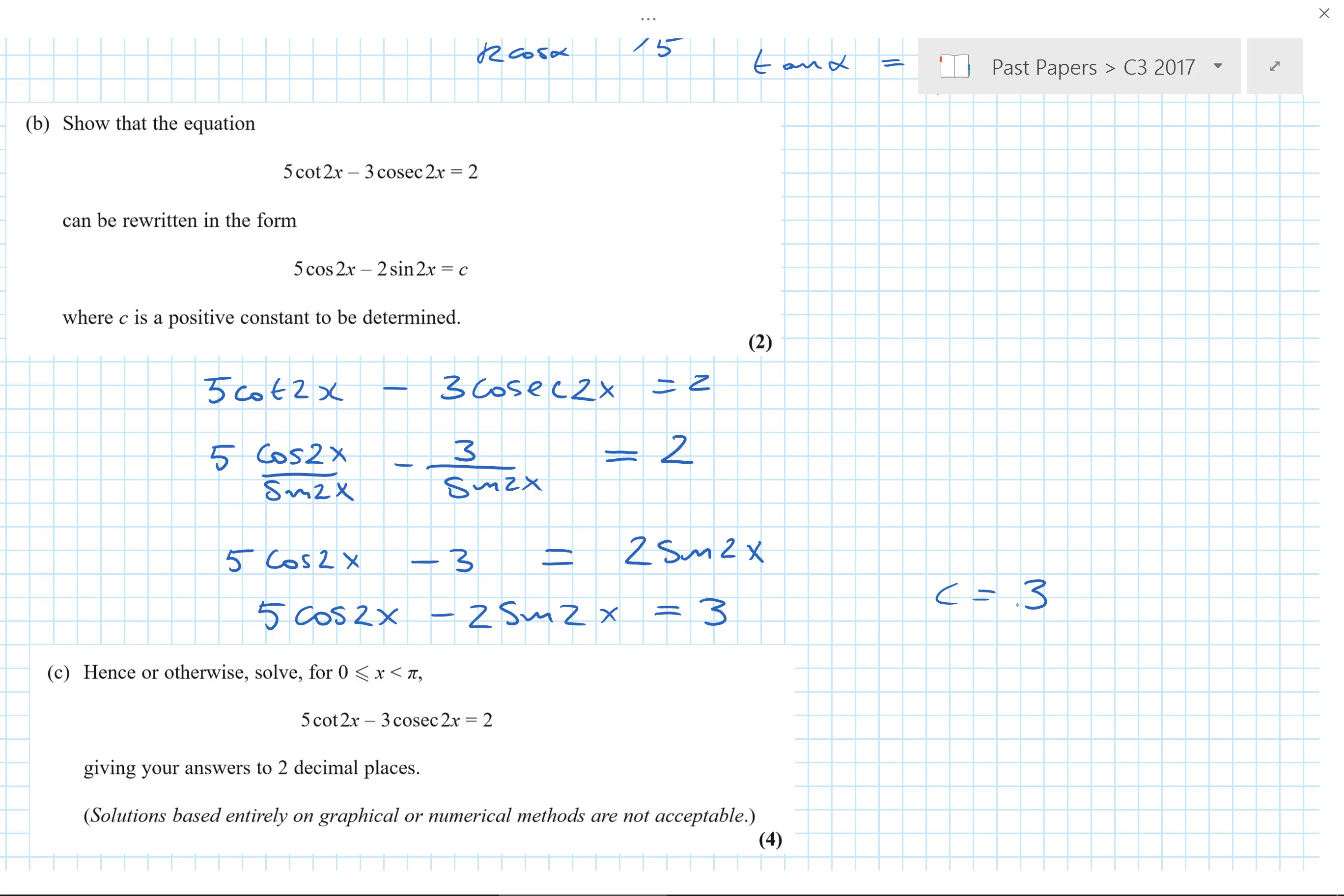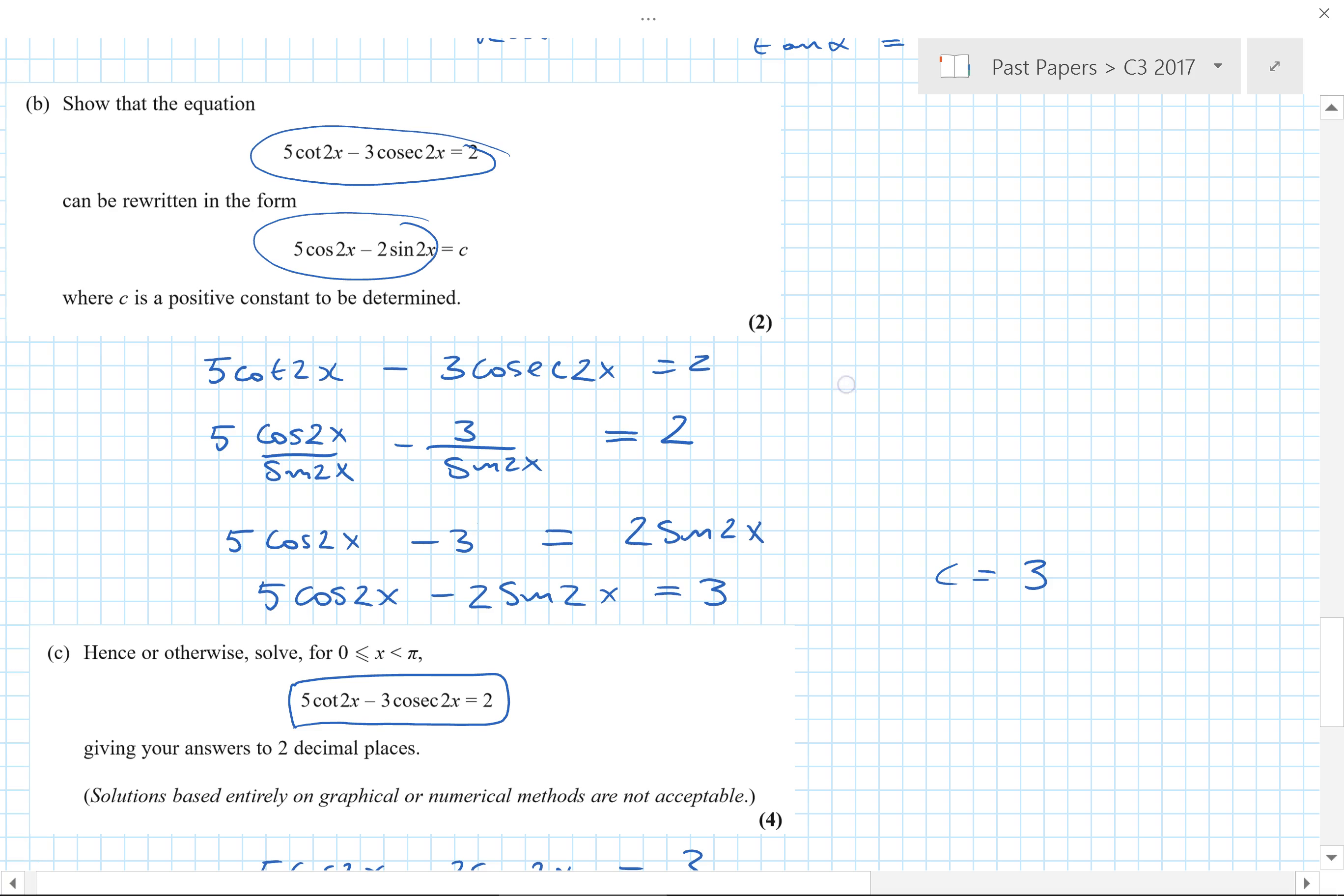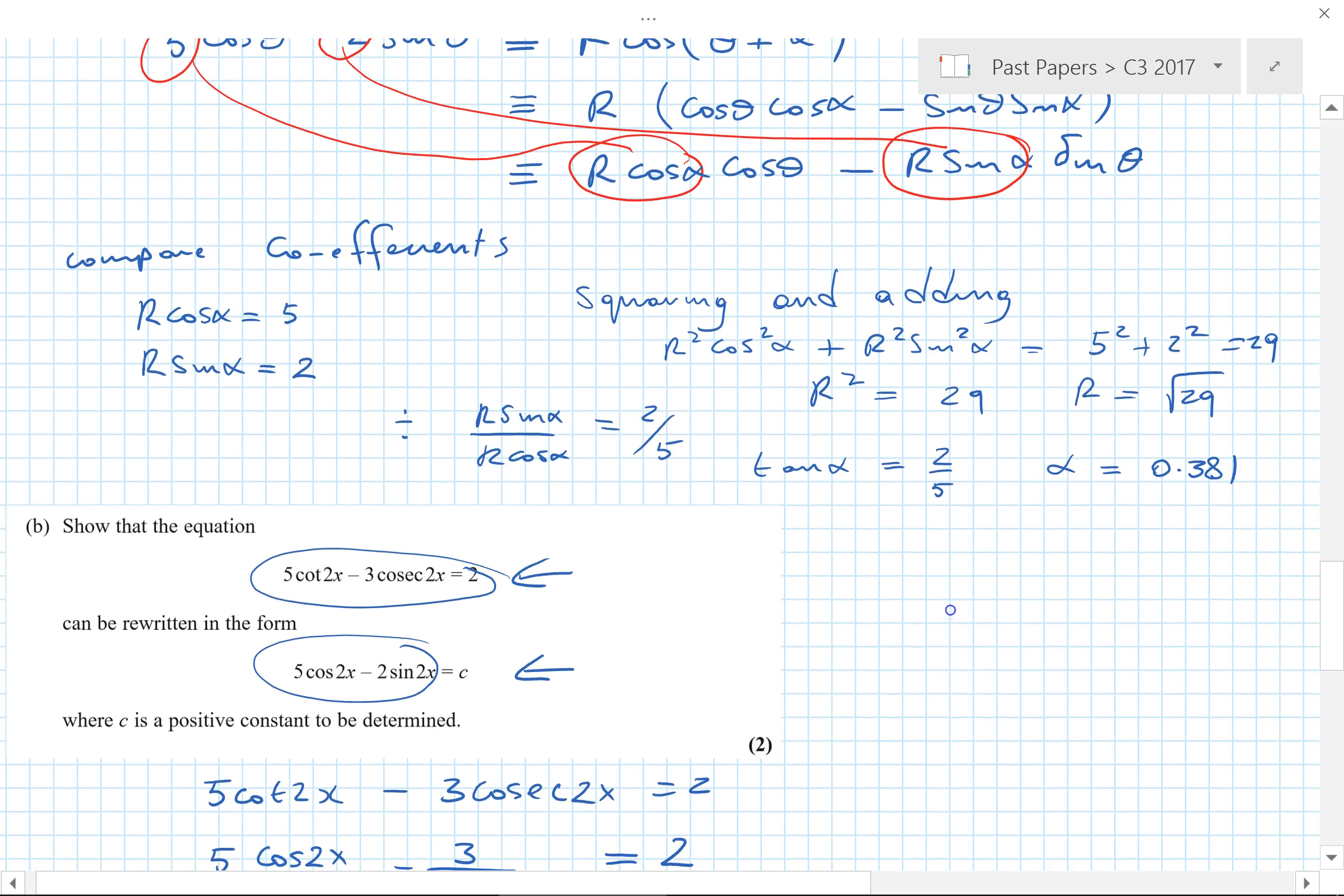So C equals 3. Those who went the right way on that did it okay. Students made a bad start by starting to use double angles and things, never going to be a good plan. Anyway, part C. Now as I said we've got an R formula for something here and we've got this equation here, but notice that equation is exactly the same as if this were equal to 2. So I'm going to rewrite that equation, and those who saw this were normally okay but a lot of students didn't equal to 2, equals to 3 because we've shown that this equation is the same as this equation with C equals 3. So if I've got the original equation then I can use this one to solve it. And why would I want to do that? Because it's easier because I can use my R formula in part A.